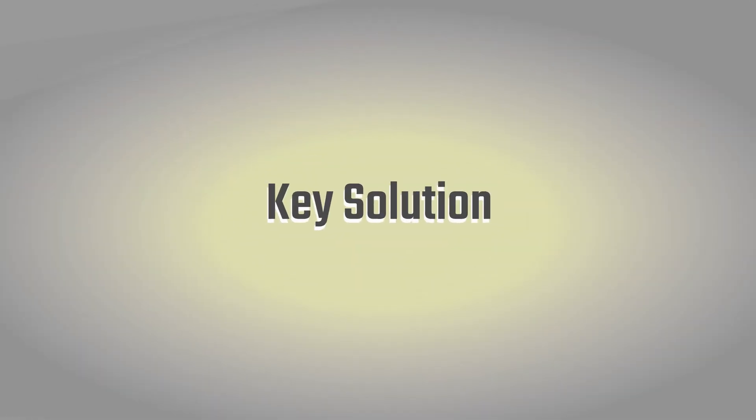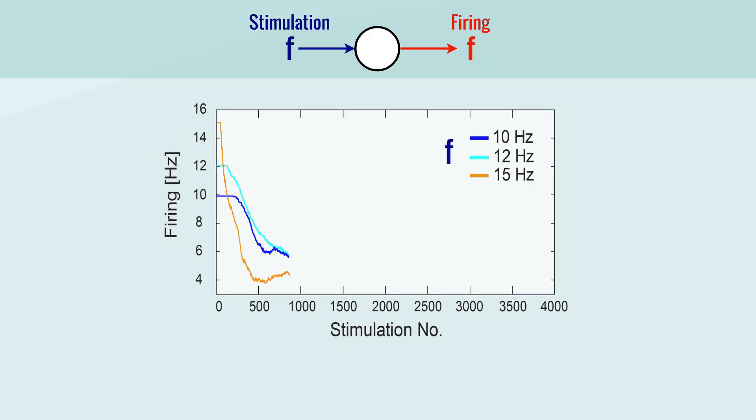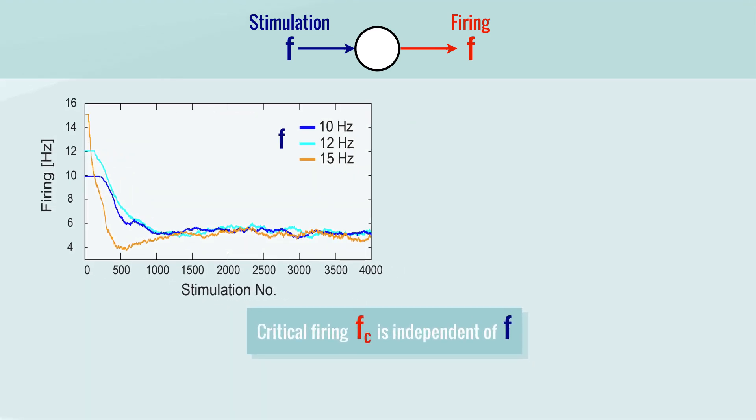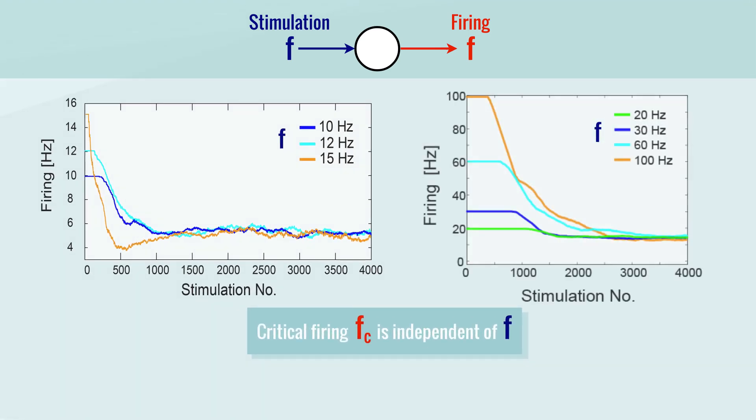Key solution: neuronal plasticity. Each neuron has a maximal firing frequency, independent of the stimulation frequency. The maximal neuronal firing frequency varies greatly between different neurons, from subhertz to a few tens of hertz.